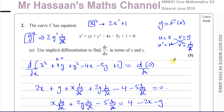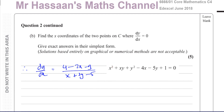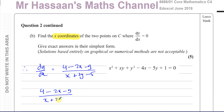That concludes part 2A. Now for part 2B: find the x-coordinates of the two points on curve C where dy/dx = 0. We only need the x-coordinates. So we equate dy/dx to 0: (4 − 2x − y) / (x + 2y − 5) = 0. The gradient is 0 when the numerator equals 0, so 4 − 2x − y = 0.